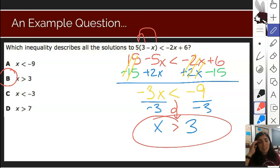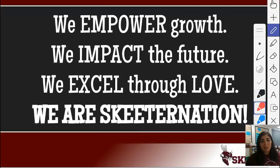Remember, this is exactly like solving equations. The only difference is that if you multiply or divide by a negative number, like in this example, you have to flip that symbol to write your solution set at the end. We empower, we impact, we love. We are Skeeter Nation.